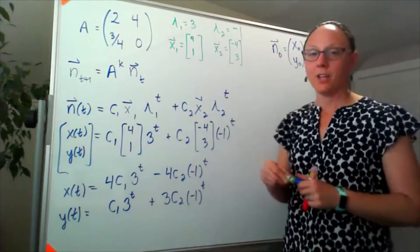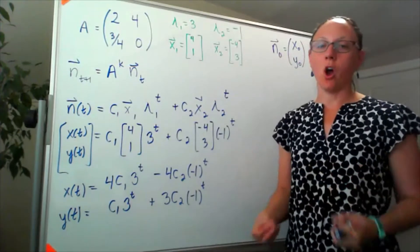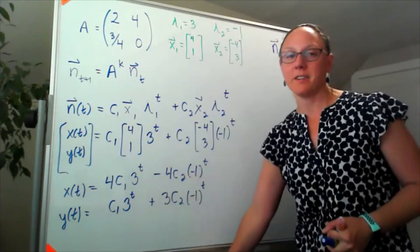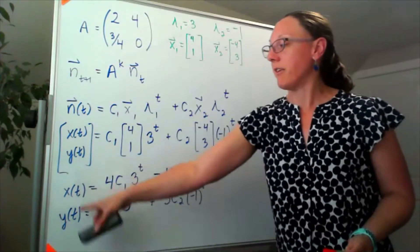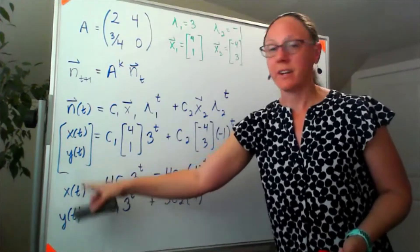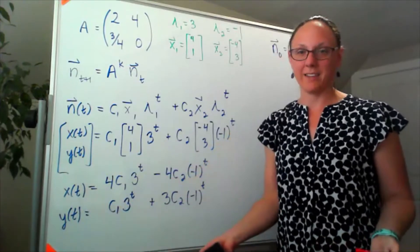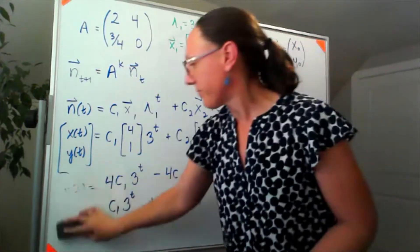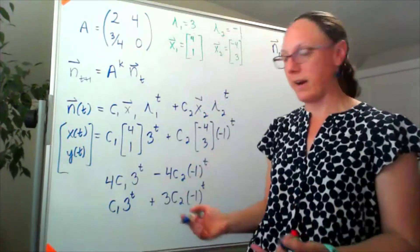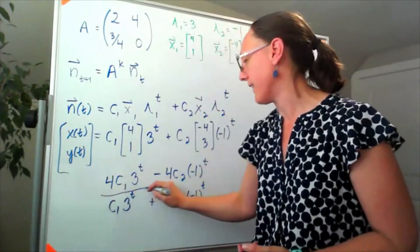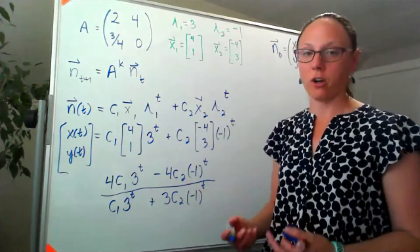So now if I'm looking for the long-term behavior of this system, and specifically I'm looking at the long-term behavior of this offspring to parent ratio, I'm going to be dividing these. If I'm looking for the long-term behavior, that means I'm looking for the limit as t approaches infinity.